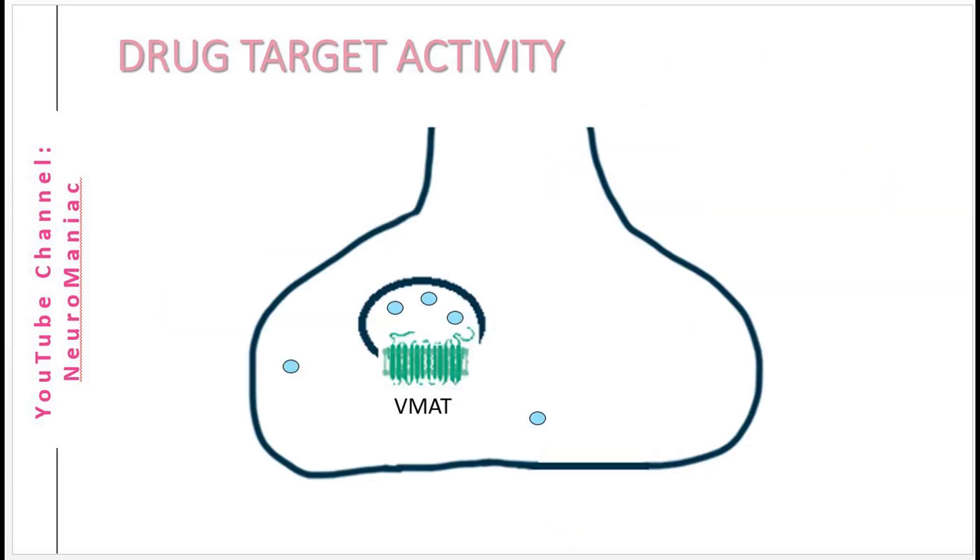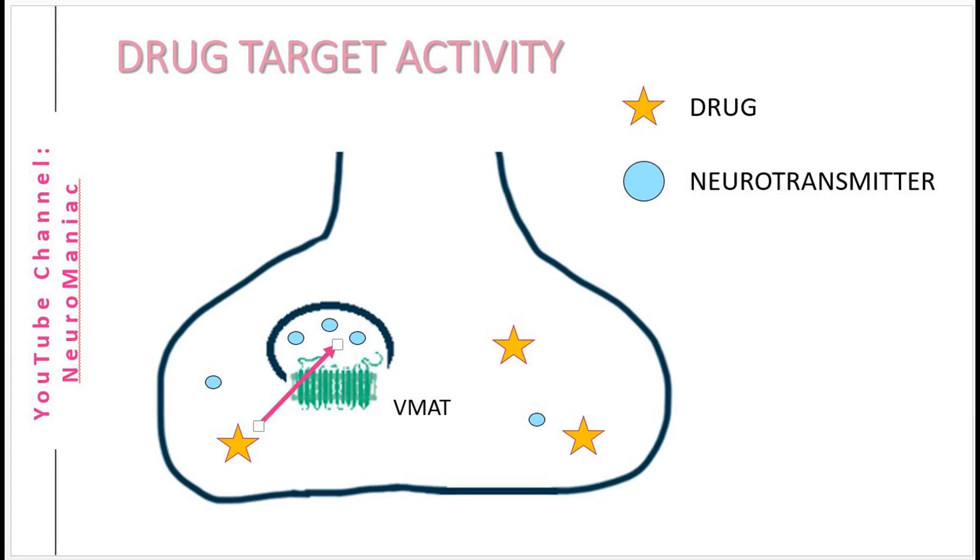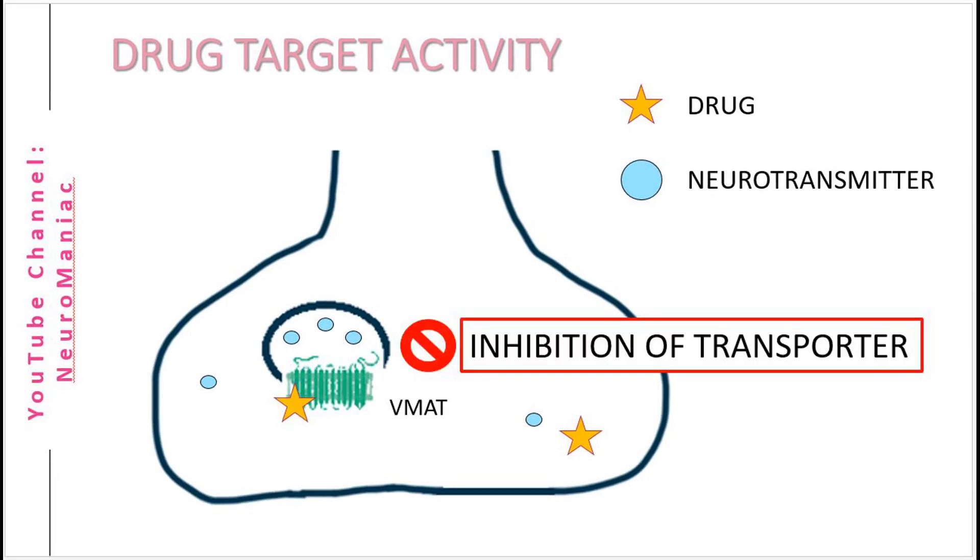In the same manner of exploiting the hitchhiking process, researchers have been able to develop drugs such as tetrabenazine. This drug is used for hyperkinesia and is a V-MAT2 inhibitor, meaning it promotes the degradation of monoamines by inhibiting vesicular storage.